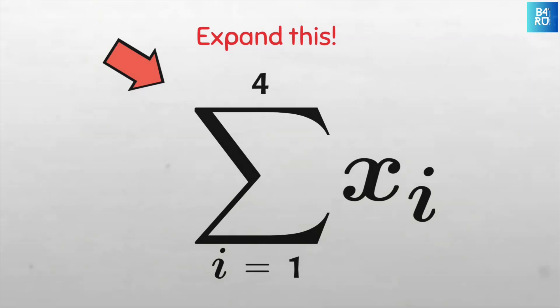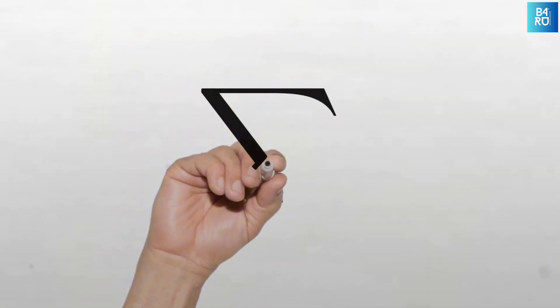We read this as summation of i equals one to four of x sub i, or summation of x sub i as i goes from one to four. Now let's break this down to its simplest form.